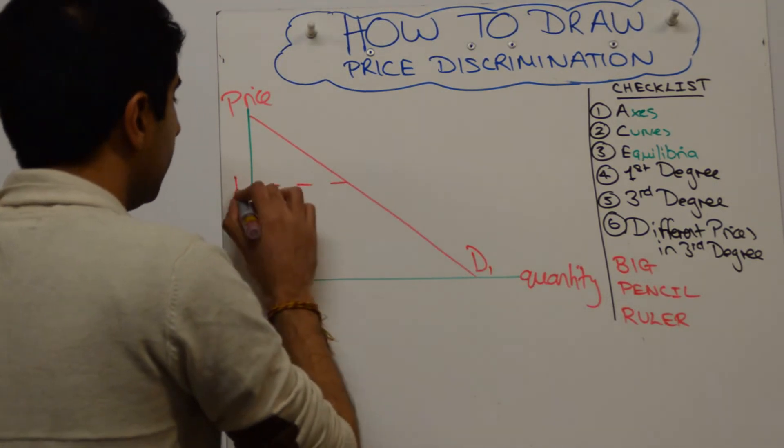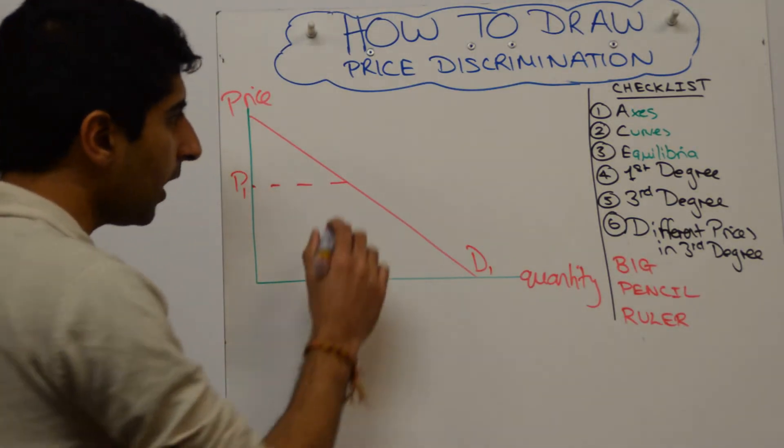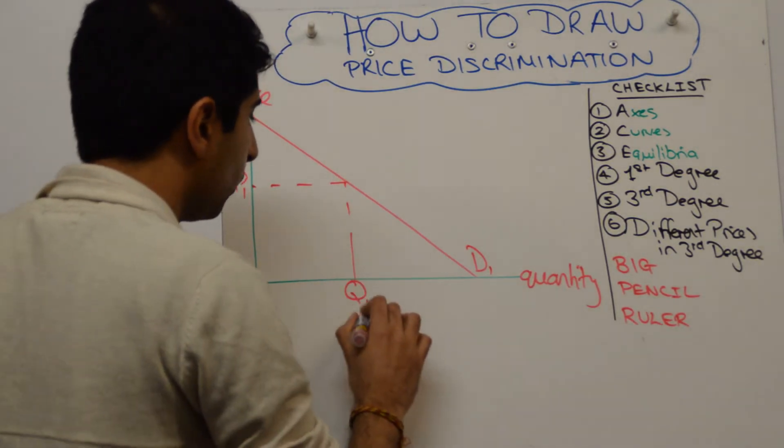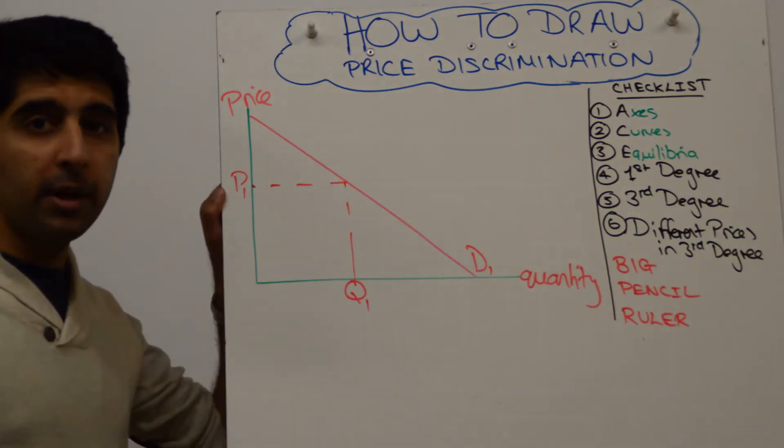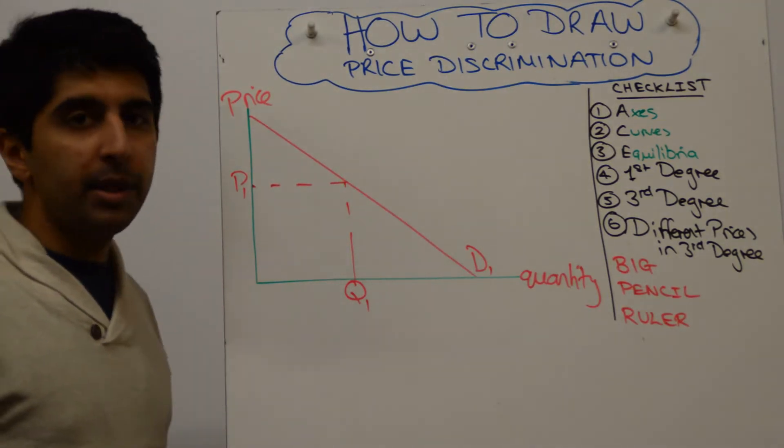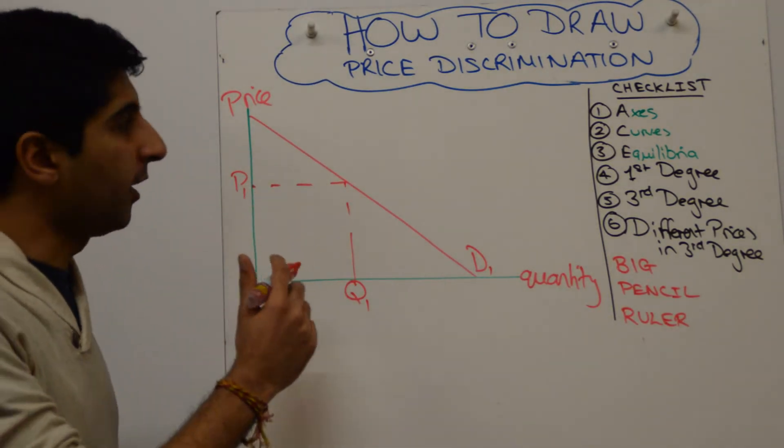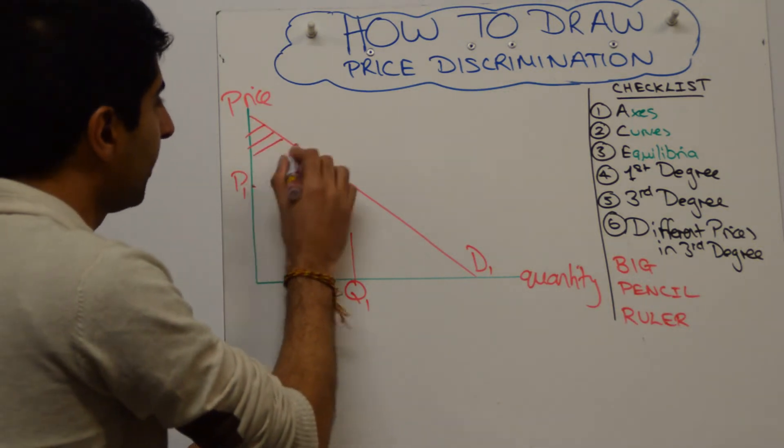Pick a price, call it P1 and the quantity at P1. And what you're trying to say is that normally in a market, P1 will be charged and there will be some consumer surplus. So shading this consumer surplus.